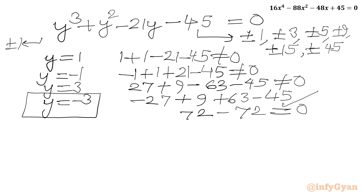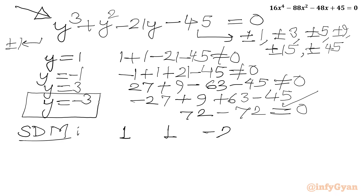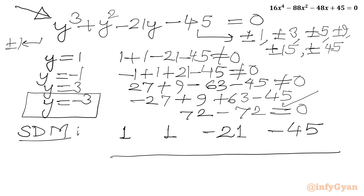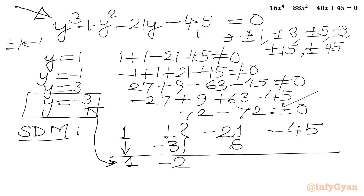So y equals minus 3 is the base solution for this cubic equation. We will use synthetic division again. Writing all coefficients of the cubic: 1, 1, minus 21, minus 45. We write the leading coefficient 1 as it is. Multiply minus 3 by 1 to get minus 3; adding gives minus 2. Then minus 3 times minus 2 is 6; adding gives minus 15.